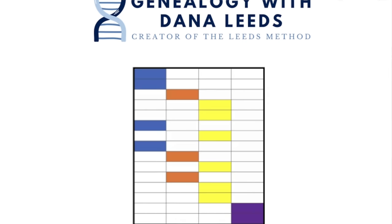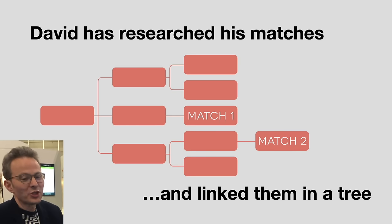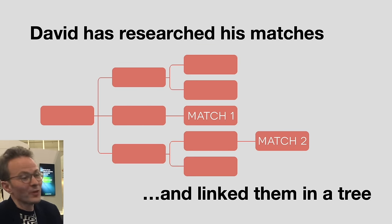There's a genealogist called Dana Leeds who came up with a simple methodology that has helped a lot of people accomplish what initially feels like a forbidding task. It's about taking your biggest matches, looking at shared matches, and color coding each group. If you're lucky, you end up with four distinct groups that you can loosely attribute to different grandparents, giving you at least a strong suspicion of which matches relate to the unknown person. David has succeeded in doing this.